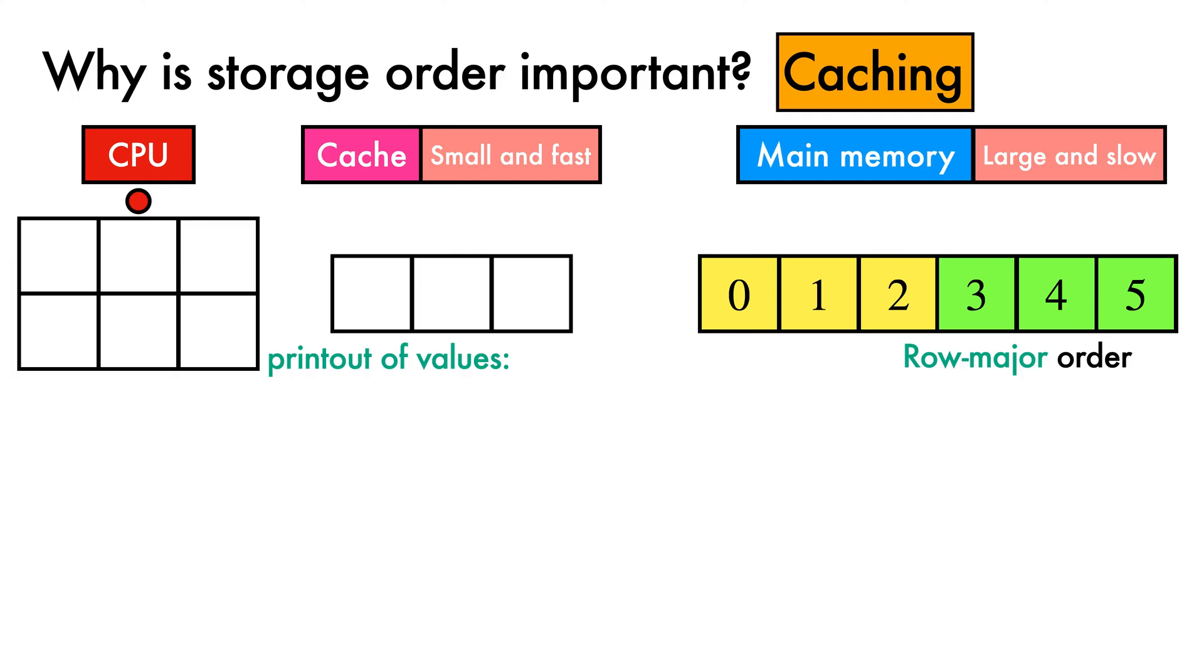Our CPU begins by looking for the appropriate value for the zeroth cell. It first tries to perform a cache load, but finds the cache empty, an event referred to as a cache miss. This will trigger the cache to perform a slow trip out to main memory, where it will fetch a block of data, in this case the three elements that include the one that the CPU cares about, and put them into the cache. The zeroth element is then fetched, loaded into the CPU, and printed.